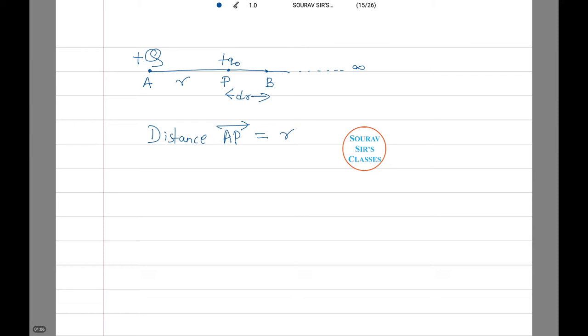Now we place a point test charge Q₀ at P. Let us consider a point B very near to P at a distance of dr such that Fp is equal to Fb.